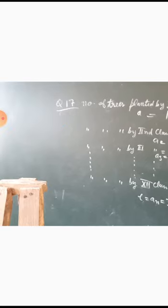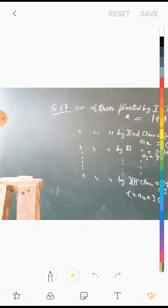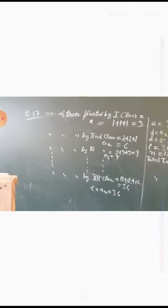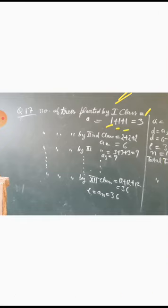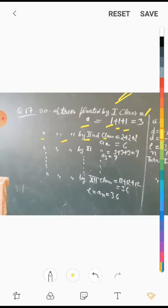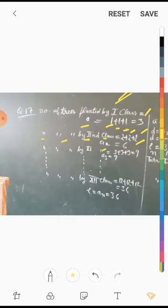Question number 17: Number of trees planted by Class 1 — each class has 3 sections, and each section plants as many trees as the class number. So Class 1 plants 1+1+1 = 3 trees (first term A1 = 3). Class 2 plants 2+2+2 = 6 trees (A2 = 6). Class 3 plants 3+3+3 = 9 trees (A3 = 9).